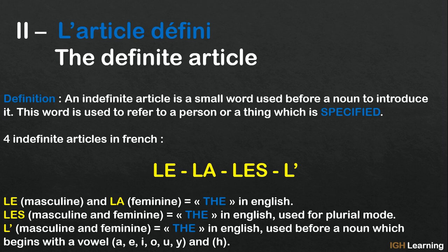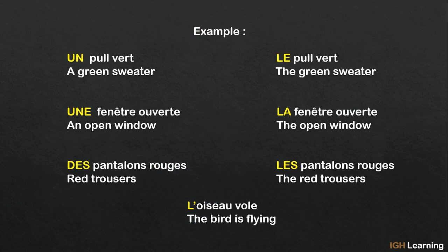Now some examples of what we have seen. Un pull vert means 'a green sweater'; une fenêtre ouverte means 'an open window'; des pantalons rouges means 'red trousers'. Then for definite articles: le pull vert means 'the green sweater'; les pantalons rouges means 'the red trousers'. On the left it is indefinite and on the right it is definite. And the last one: l'oiseau vole means 'the bird is flying'. We used l'apostrophe because, as you can see, this word begins with 'o', and 'o' is a vowel.